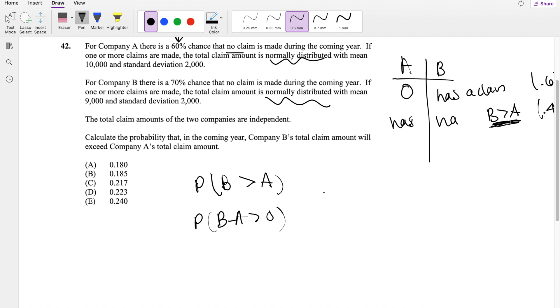So in order for us to normalize it, we need the mean. We know the mean of A is equal to 10,000. The mean of B is equal to 9,000. I'm going to denote X is equal to B minus A. So we need the mean of X, which is exactly just the mean of B minus A, which is equal to 9,000 minus 10,000, which is equal to negative 1,000.